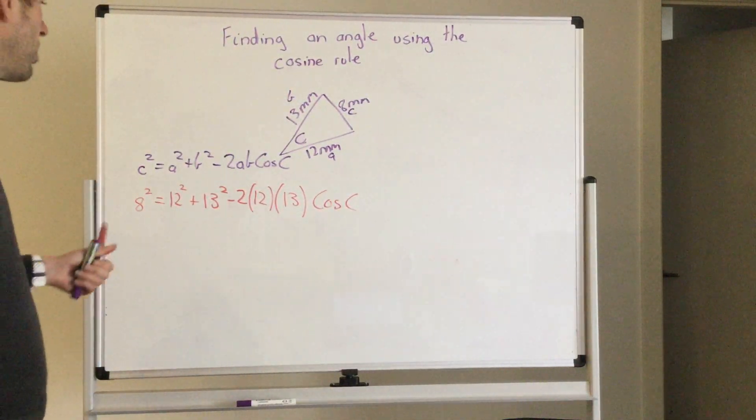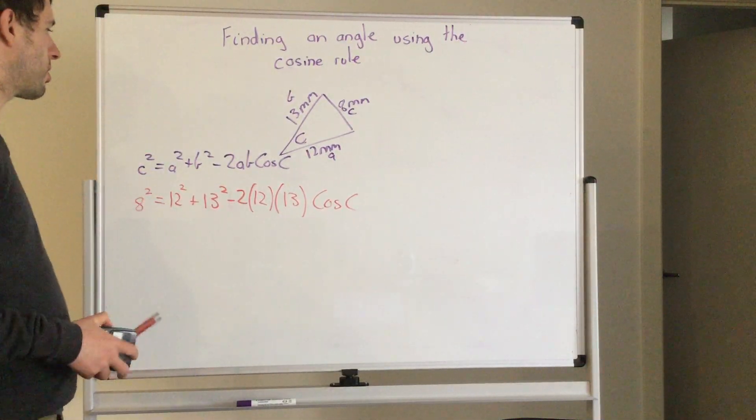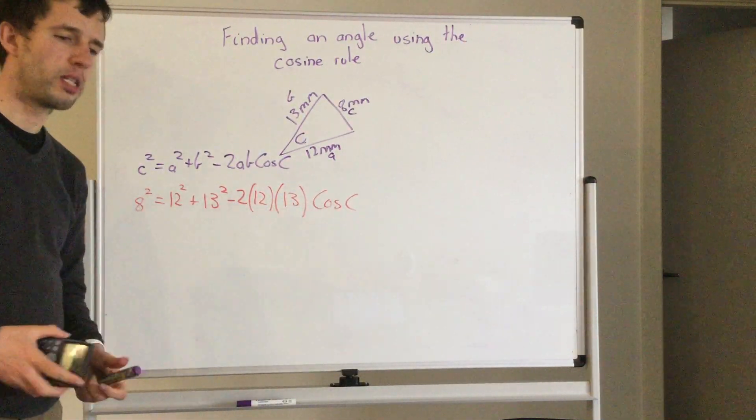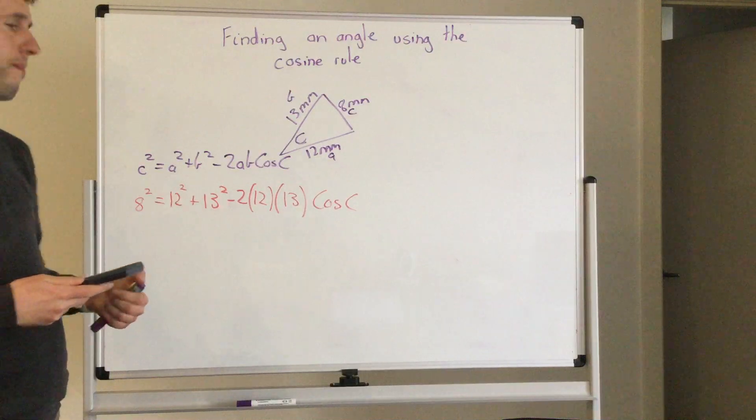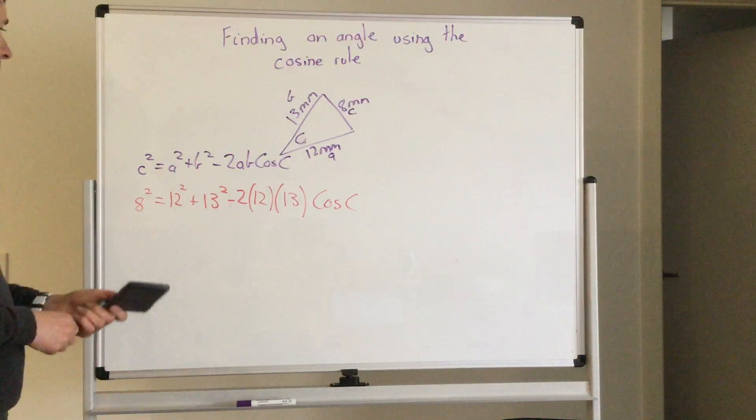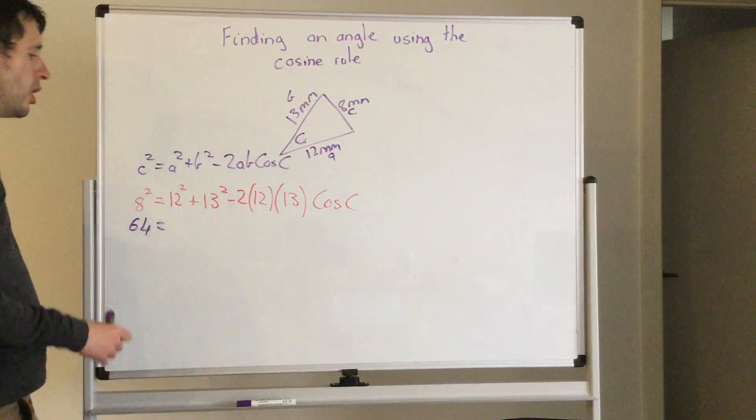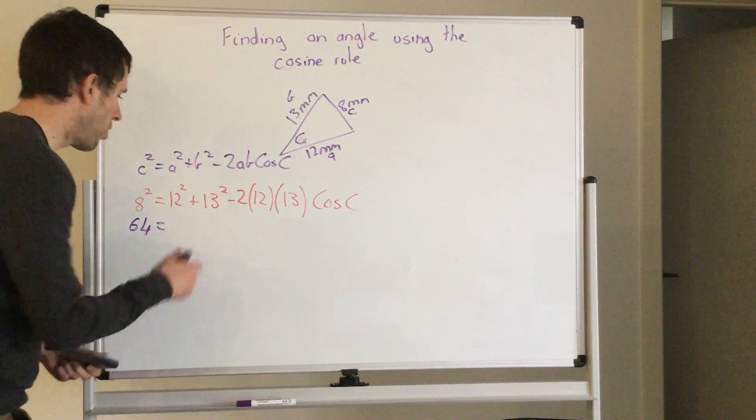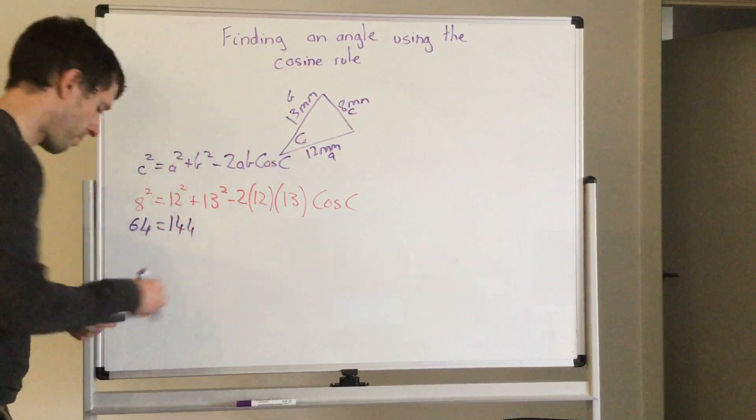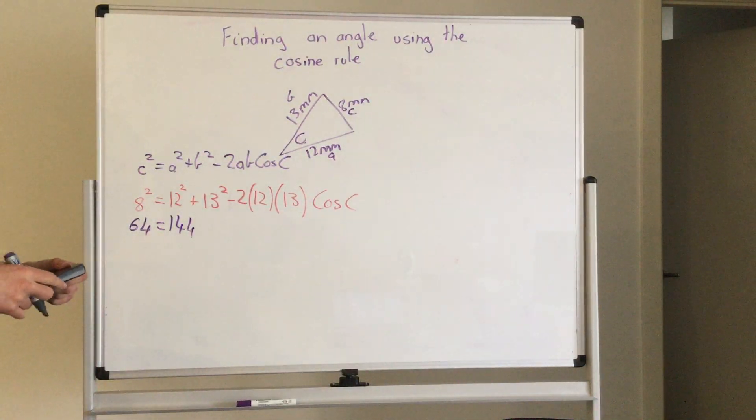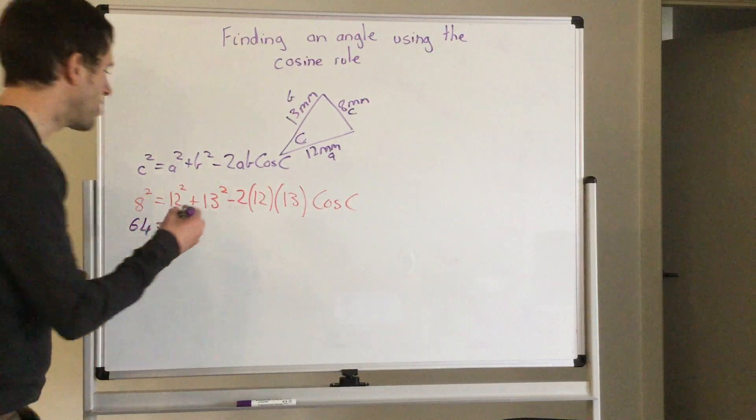The first thing I'm going to do is get everything solved except for the last part. So let's have a go. I know 8 squared is 64, 12 squared is 144, 13 squared is 169.